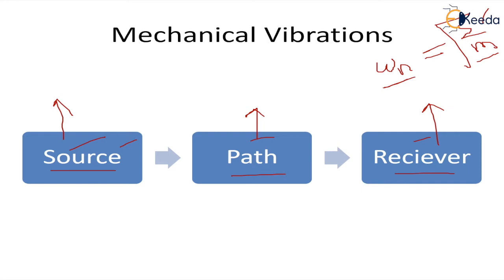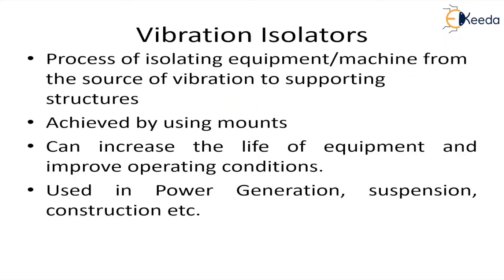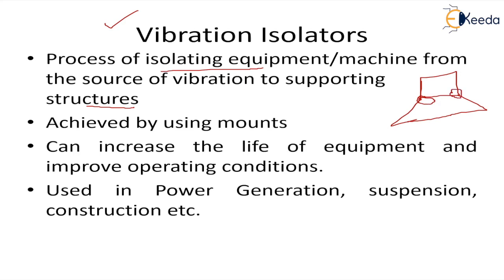In this video we'll specifically discuss how mechanical vibrations can be controlled on the path. To control vibrations on the path or at the foundation, we can use vibration isolators. This is the process of isolating the machine from the source of vibration to supporting structures. Between the machine and the frame or support structure, we can add isolators to control the transmission of vibration. By using vibration isolators, we increase the life of the equipment and also improve the operating and working conditions of people in the surroundings.